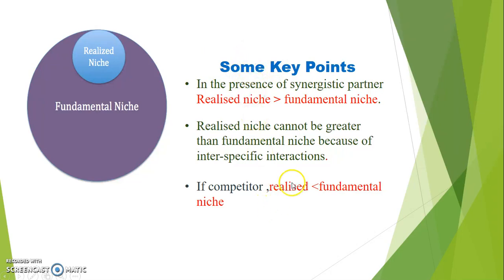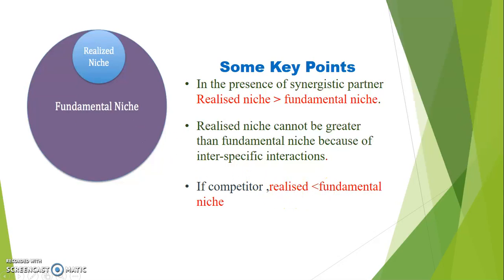Key points: fundamentally, niche is constant and realized niche is variable. Mostly, fundamental niche is greater than realized niche, but there are exceptions — for example, synergistic partners who are mutually benefiting each other, where realized niche can be more than fundamental niche. Realized niche cannot be greater than fundamental niche due to inter-specific interactions, and for competitor species, realized niche is always less than fundamental niche.